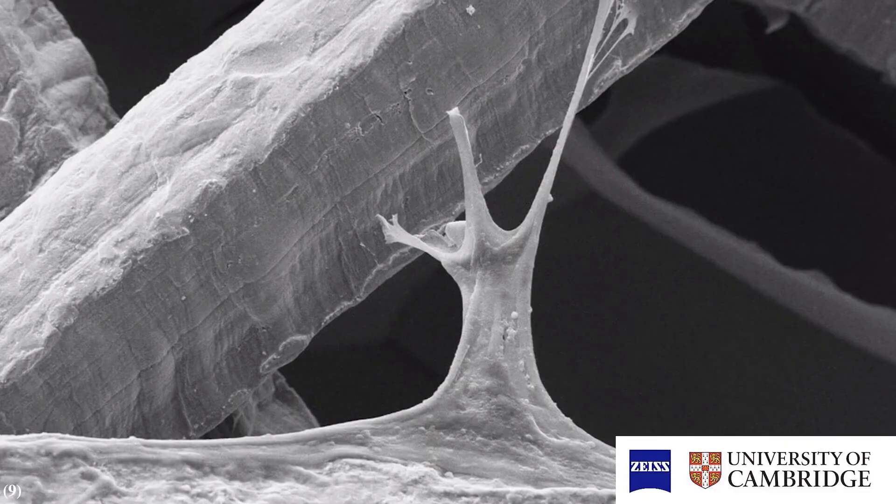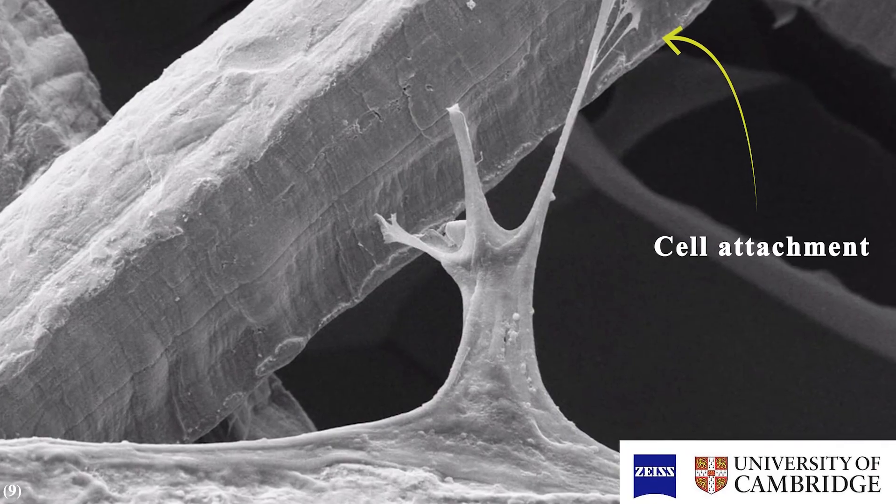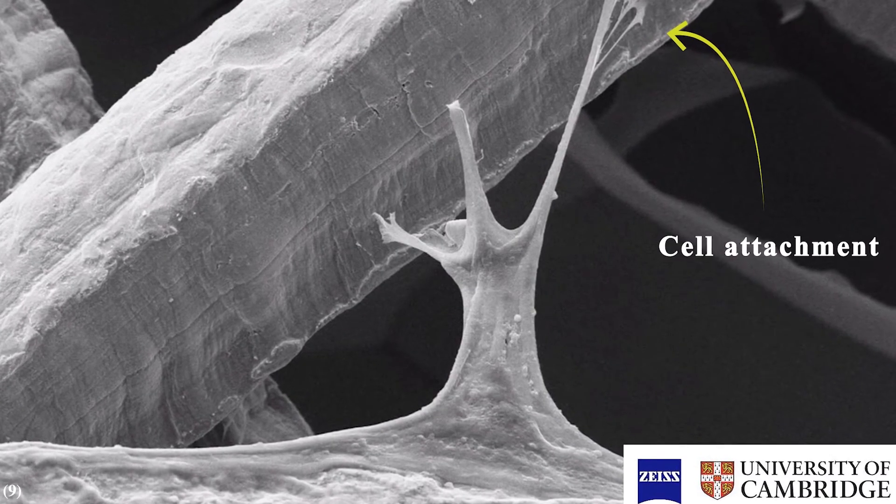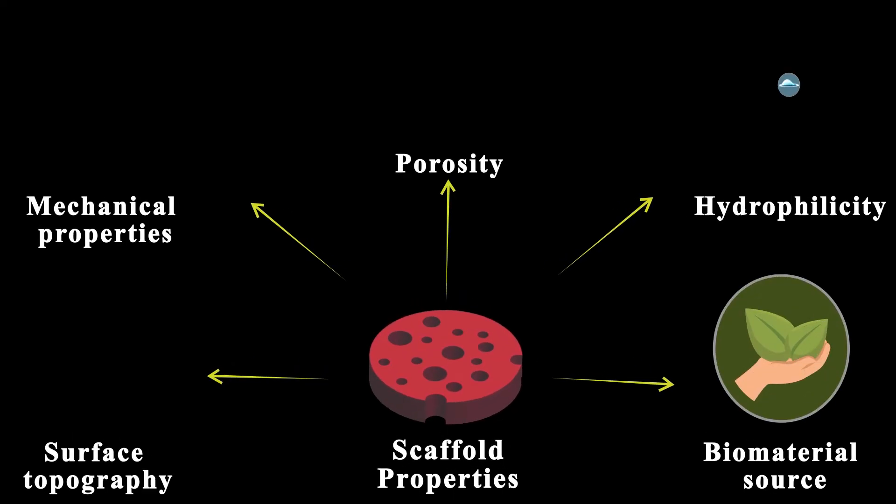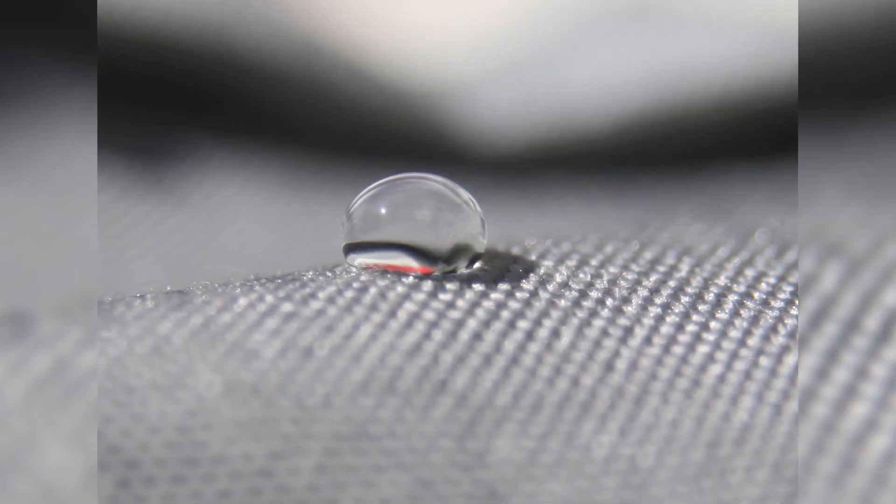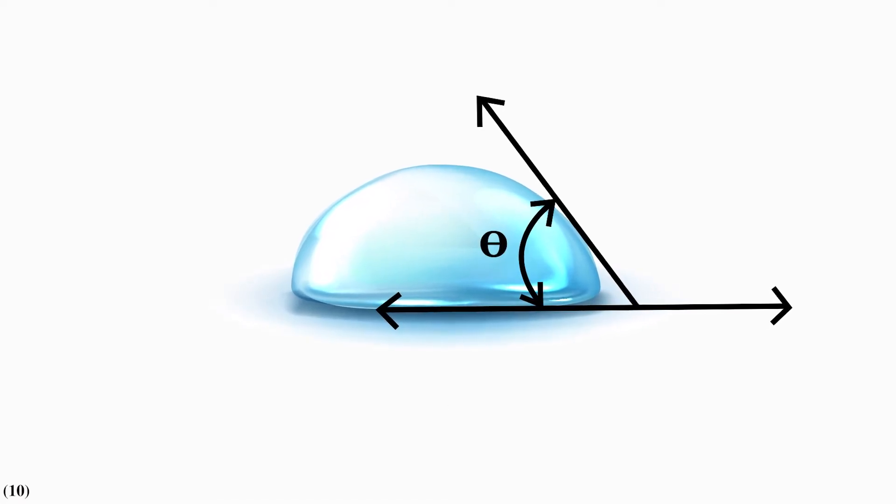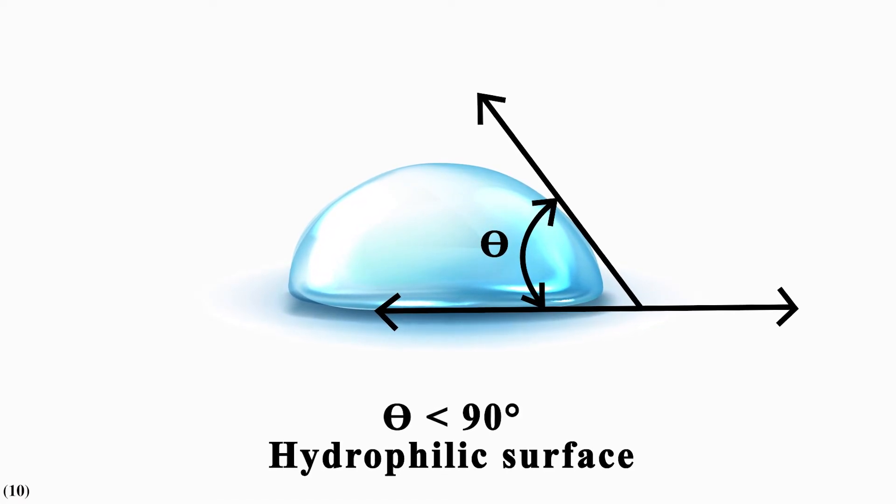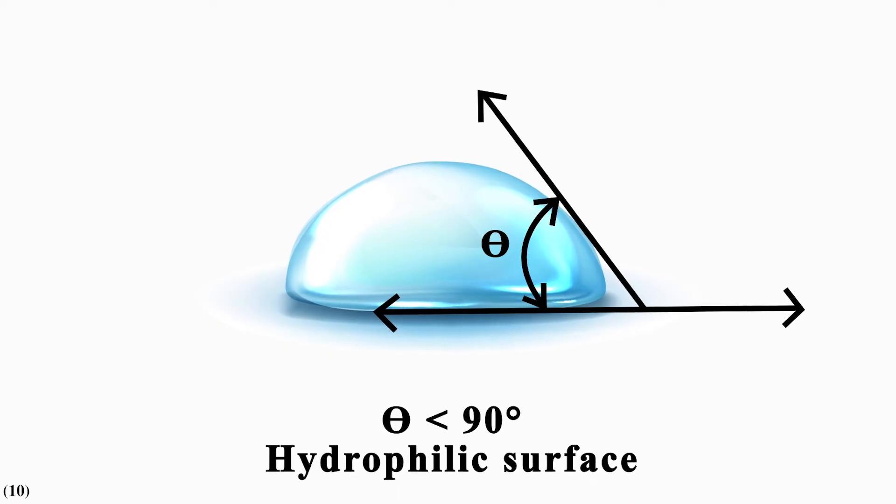At first, we need our cells to move towards our biomaterial and attach to it, so we need a hydrophilic biomaterial. Hydrophilic means how much our biomaterials can attract water, and we can measure this in the lab by putting a drop of water on the biomaterial surface. If it is less than 90 degrees, we consider the biomaterial hydrophilic, and our cells love hydrophilic surfaces.